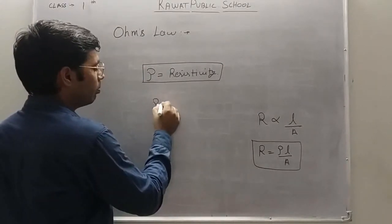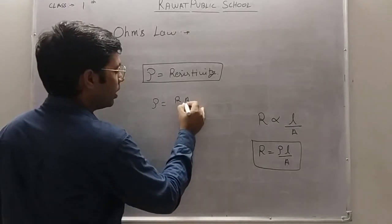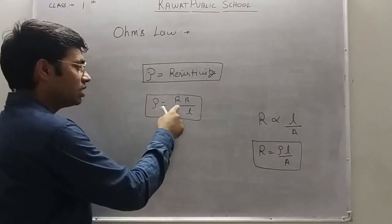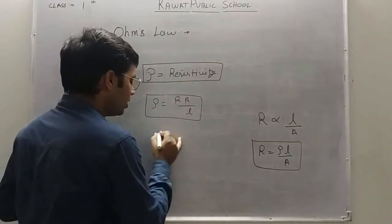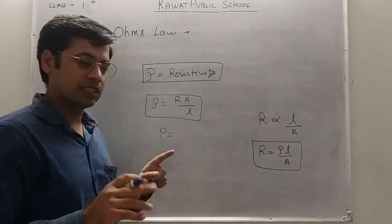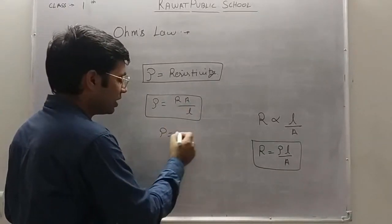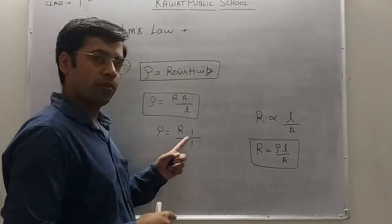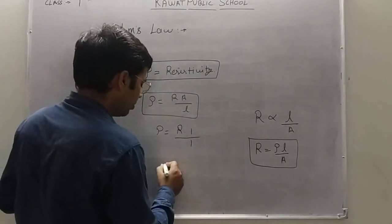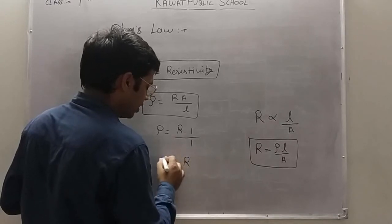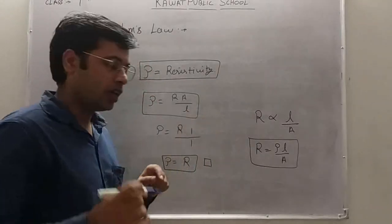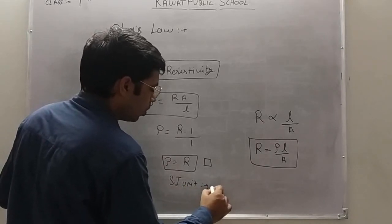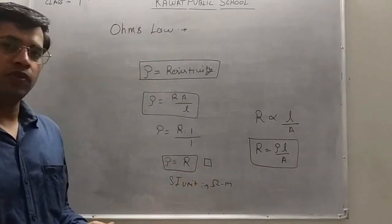From the resistivity formula, rho equals R times A divided by L. Resistivity is defined as the resistance offered by a material of 1 meter length and 1 square meter cross-sectional area — equivalently, the resistance shown by a cube of the material. The unit of resistivity is Ohm·meter.